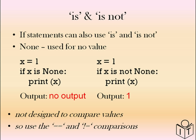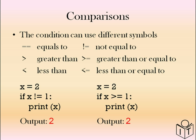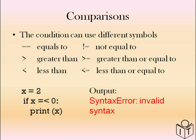With strings you have to remember that comparison is case sensitive. The first example, x equals 'one' the string, so that will print. In the second example, it doesn't print anything because 'one' is lowercase while x has an uppercase O, so the condition is false and there's no output. We can use different mathematical symbols: equals-to (two equal signs), not-equal-to, greater-than, less-than, greater-than-or-equal-to, and less-than-or-equal-to. Be careful — if you get the symbols the wrong way around you'll get a syntax error.